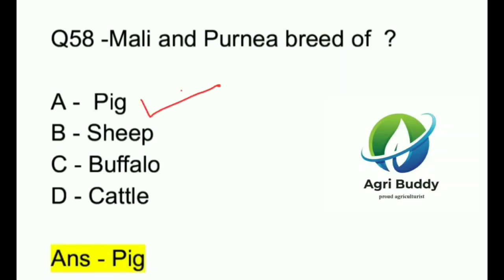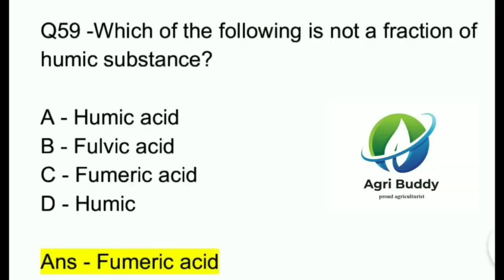Question 59. Which of the following is not a fraction of humic substance? A. Humic acid. B. Fulvic acid. C. Fumaric acid. D. Humin. And the answer is Fumaric acid.